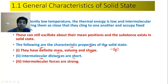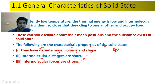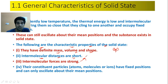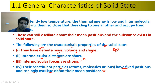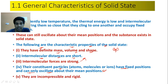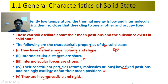Intermolecular forces are strong — तभी तो वो thermal energy को dominate करते हैं और solid बनता है। The constituent particles — atoms, molecules, and ions — have fixed positions and can only oscillate about their mean position; only vibratory or oscillatory motion होता है। They are incompressible and rigid.